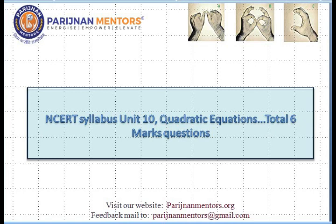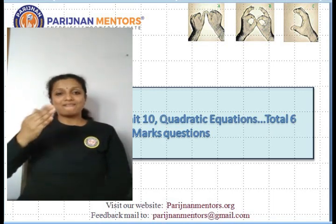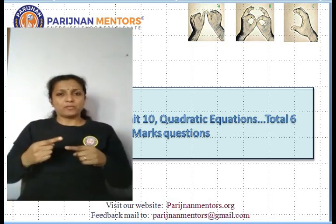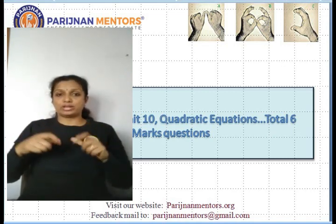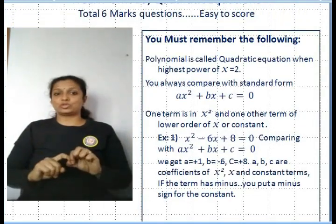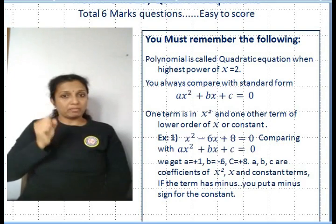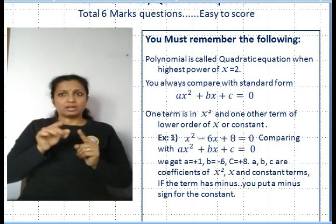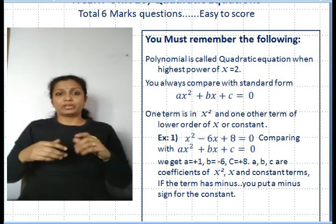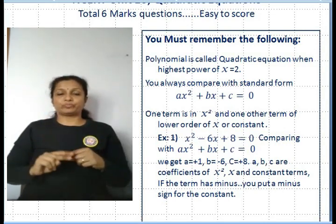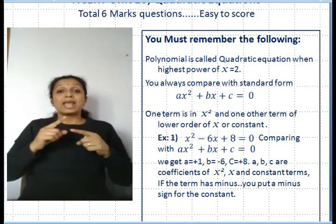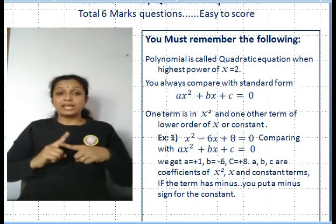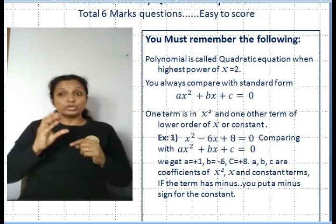Hello students, welcome to Parijan Mentors. This is NCERT Unit 10, Quadratic Equations — total marks 6. A polynomial is called a quadratic equation when the power of x is equal to 2. Always compare with the standard form: ax² + bx + c = 0, where one term is in x² and another term is in a lower order of x or a constant.